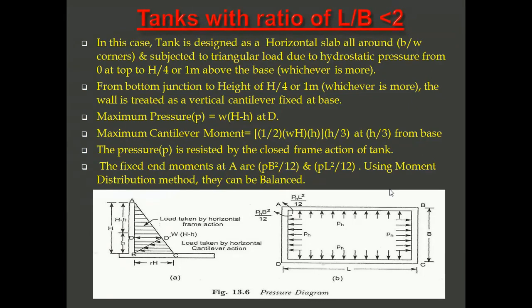In Case 1, when L/B is less than two, the tank is designed as a horizontal slab all around with fixed corners, subjected to horizontal hydrostatic pressure. From the bottom junction, to a height of H/4 or one meter — whichever is more — the wall is treated as a vertical cantilever fixed at the base. Maximum pressure equals w × (H − h), where H is the entire height of the tank and h is the water level at point D. The fixed end moments are: at corners A-B direction, it is p × L² / 12, and at A-D direction, it is p × B² / 12, which can be balanced using the moment distribution method.